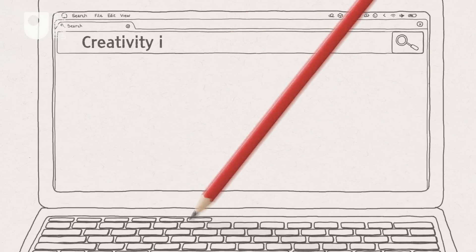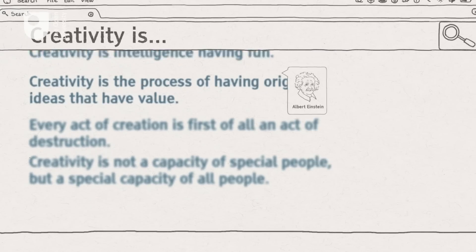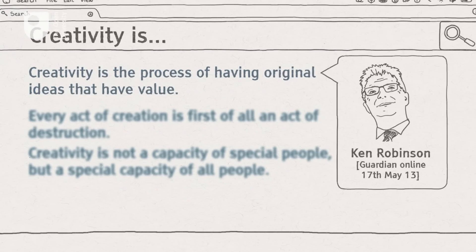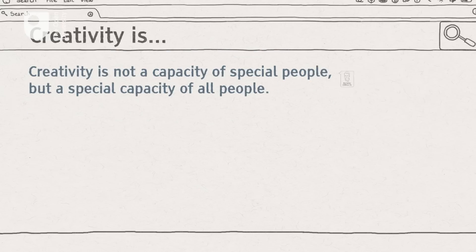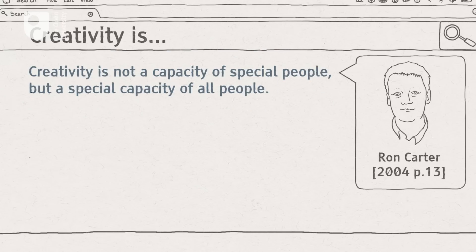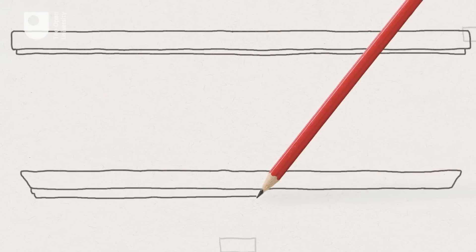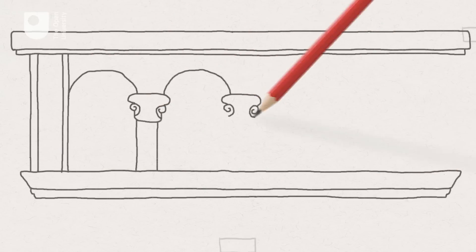A dictionary definition only gets us so far. We can also look at how other people have defined it and the key features they've identified for it. Creativity is intelligence having fun. The process of having original ideas that have value. Every act of creation is first of all an act of destruction. Creativity is not a capacity of special people, but a special capacity of all people.